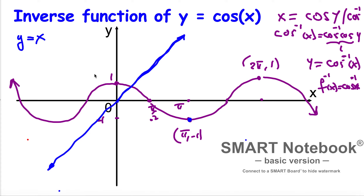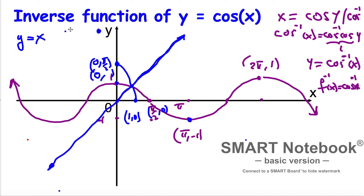This point here is (0, 1) and this point is (1, 0) — so this part is symmetrical with that part. Here is (0, π over 2) — mapping that point gives us (0, π over 2). Going up to π: that point is (π, −1). Writing (−1, π) gives us the inverse function. Let me use a different color — so this is the inverse function of cosine x.